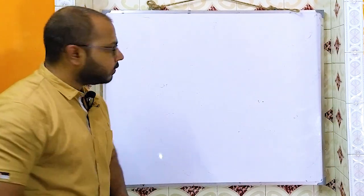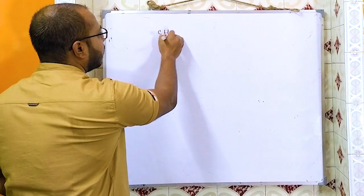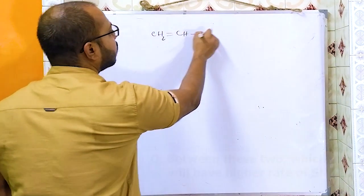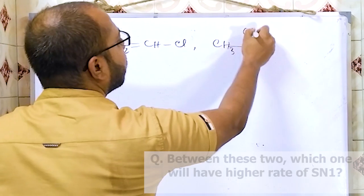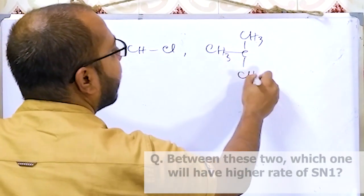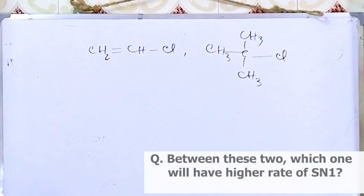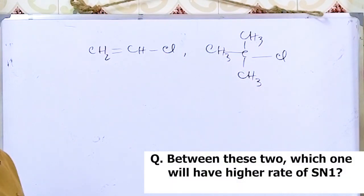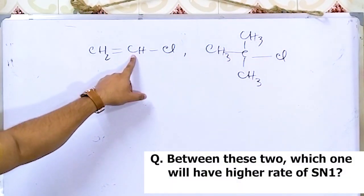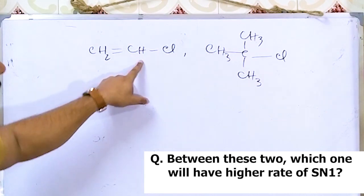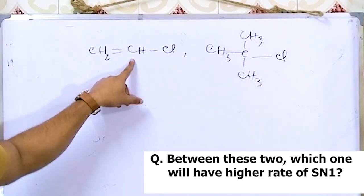Next question: between two given compounds, which one will have a higher rate of SN1? In the case of vinyl chloride (or phenyl chloride), after elimination of chlorine the carbocation formed is sp2 hybridized and therefore very unstable. SN1 goes via carbocation formation.